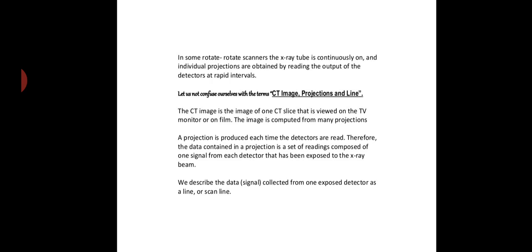In the original rotate-rotate scanners, the x-ray tube was pulsed. Each pulse of the tube produced one projection, and the number of scan lines in each projection was equal to the number of detectors. In some rotate-rotate scanners, the x-ray tube is continuously on, and individual projections are obtained by reading the output of the detectors at rapid intervals. Let us not confuse ourselves with the term CT image, projections and line. What is the difference between the CT image, projections and line is given below.